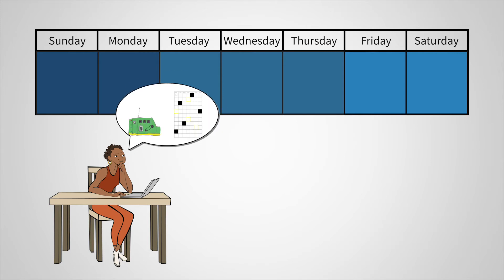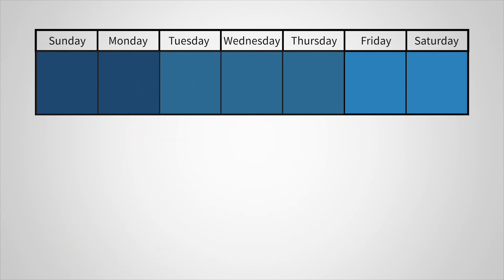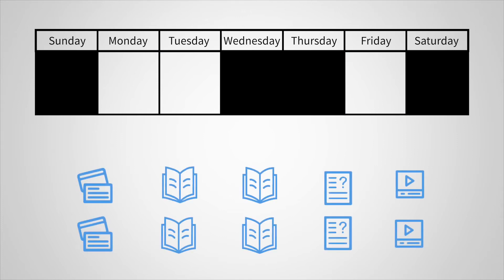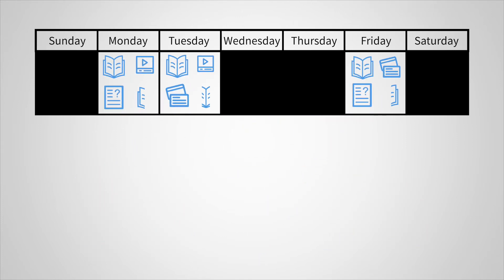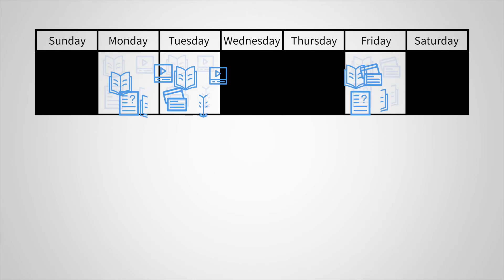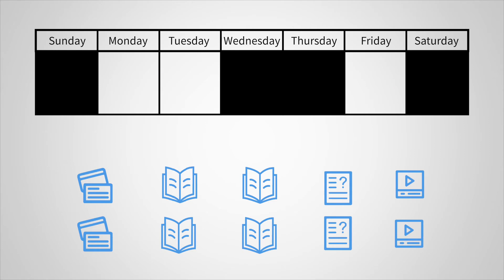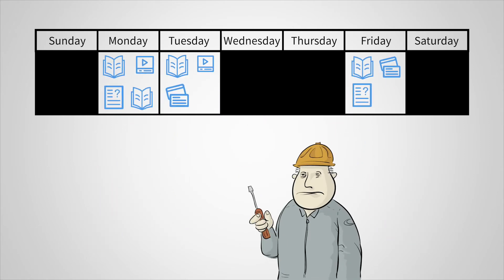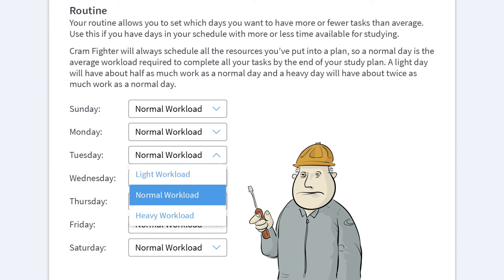Cramfighter takes all the work you have and tries to distribute it relatively evenly. So, let's say you had 3 days in your schedule and 10 hours of total work to do. If every day has the same workload, that would mean you'd have about 3 and 1/3 hours of work per day. But if your schedule is more complicated, you can mark a day as heavy to get more tasks on those days, or mark a day as light to get fewer tasks.